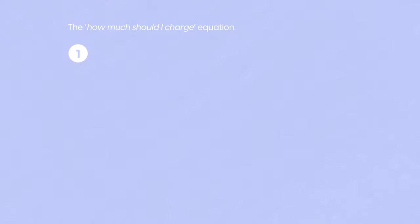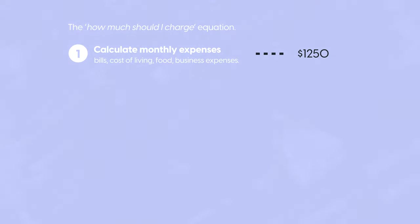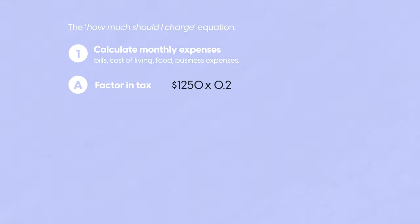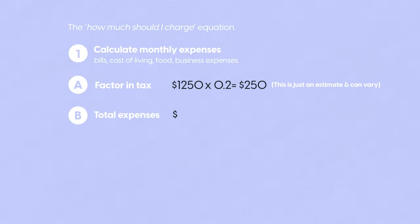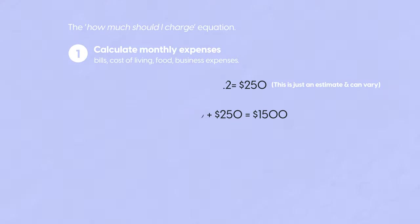First, work out your monthly expenses — this includes things like bills, cost of living, food, and business expenses. Basically, how much money you need to earn in order to survive. Once you have this figure, multiply it by 0.2 to get a rough estimate of how much you would be taxed — this can vary depending on your income and country. Then add this figure to your monthly expenses to see how much you need to earn each month to survive.